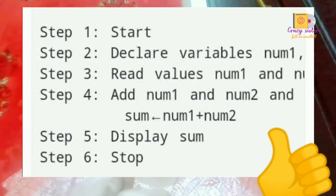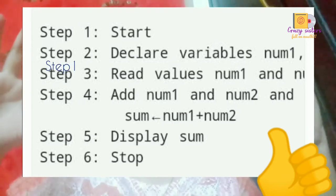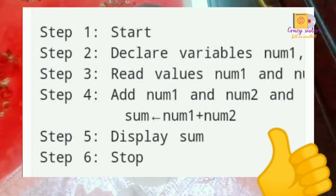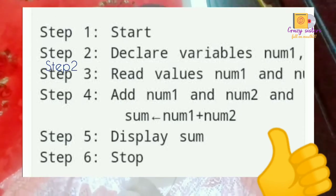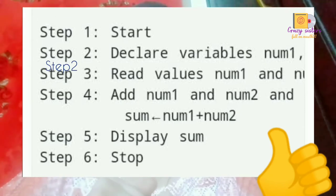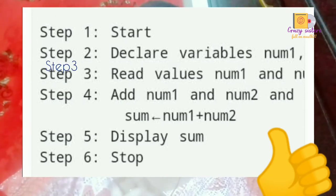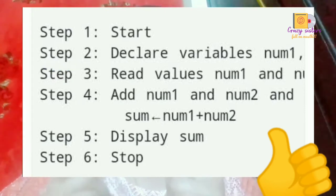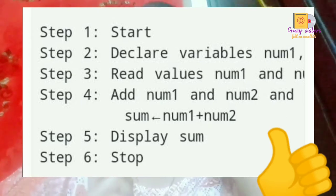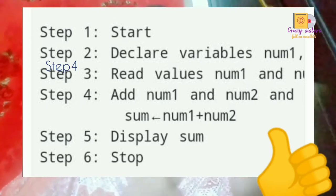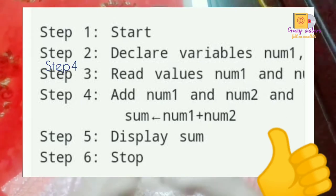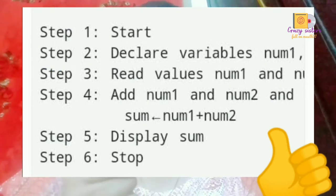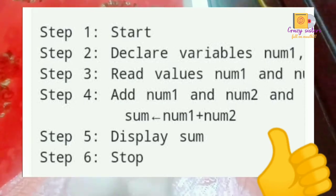Similarly, in computer language we write these same three steps. First, start — as soon as we start, we declare two numbers: number one and number two. We read those two numbers, then add them and store the result in a variable called result. Then we print that variable and we get the result. It's a very easy process.